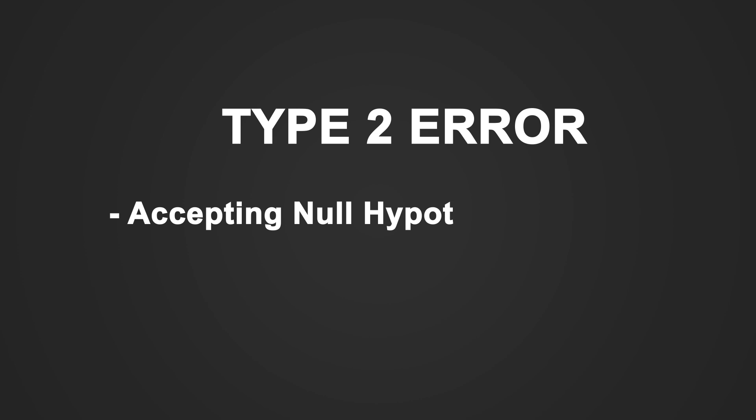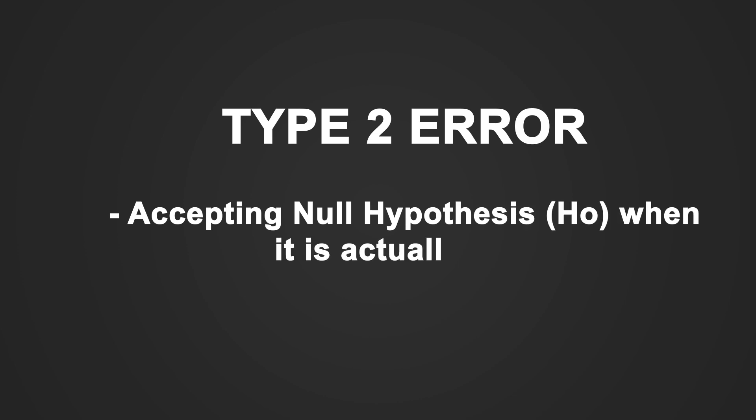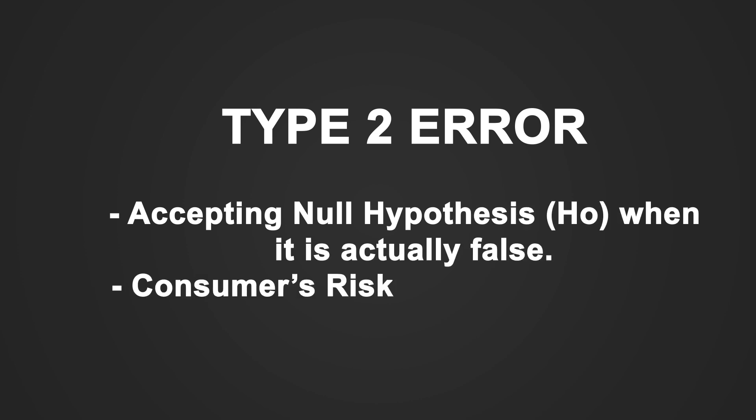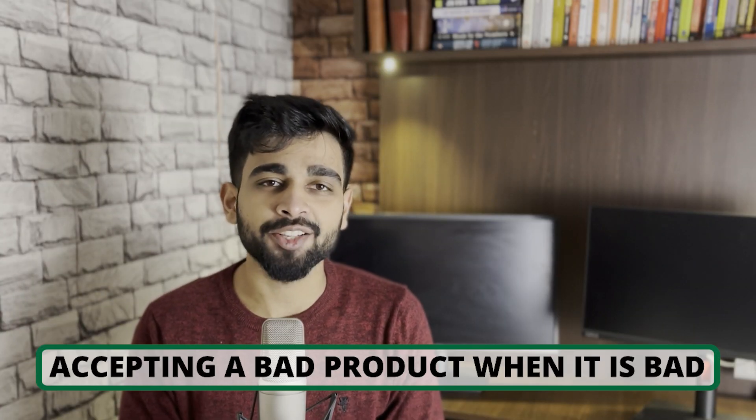Similarly, in technical terms, Type 2 error is accepting H0, the null hypothesis, when it is false. It is also known as consumer's risk — the probability of accepting a bad product when it is actually bad.